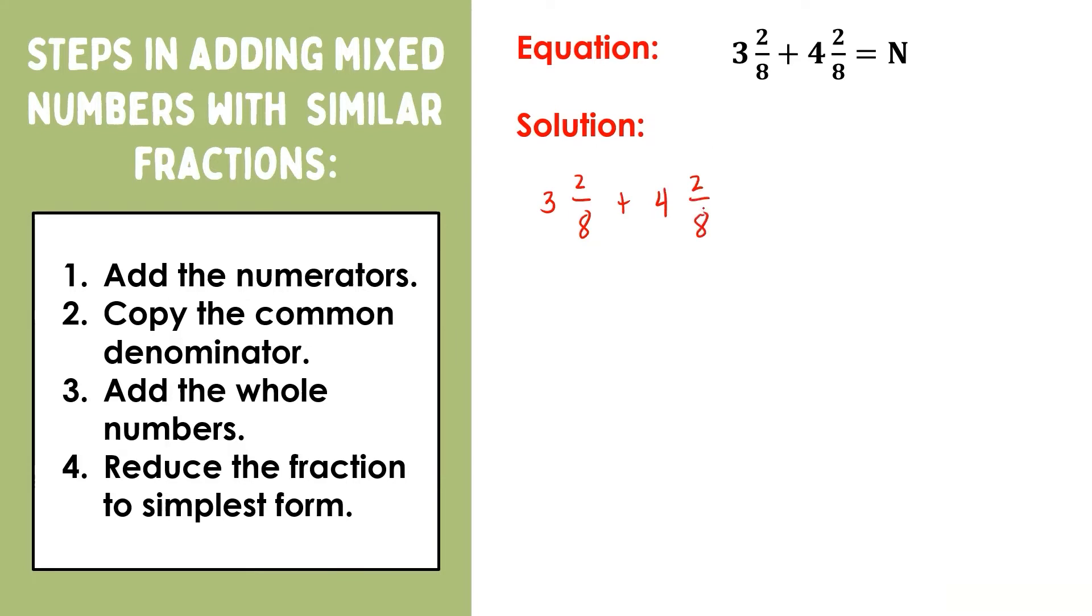So for us to add these numbers, again, we will add the numerators first. And 2 + 2 = 4. Then we copy the common denominator, which is 8. But before we simplify this fraction, let us not forget to also add the whole numbers. That is, 3 + 4 = 7. So we now have 7 4/8.